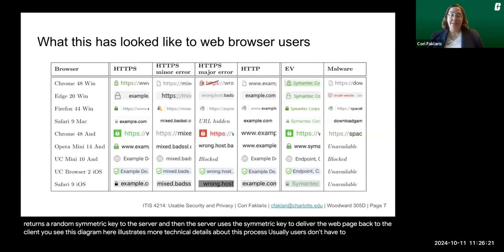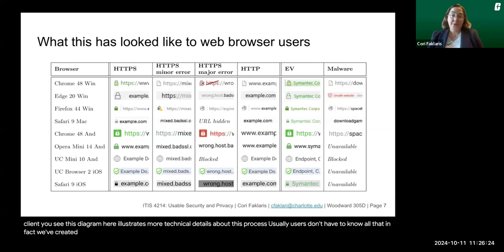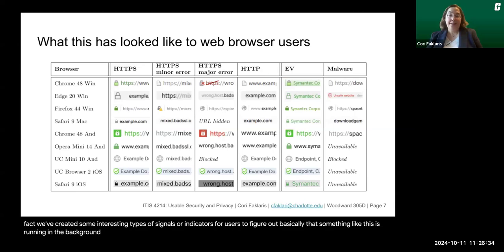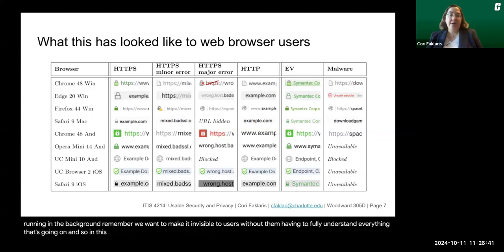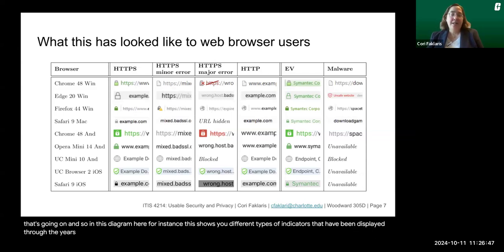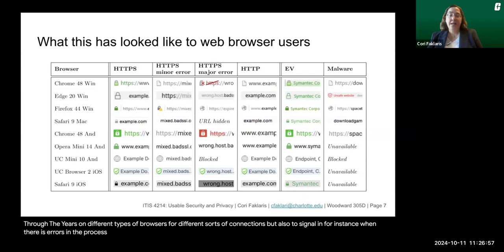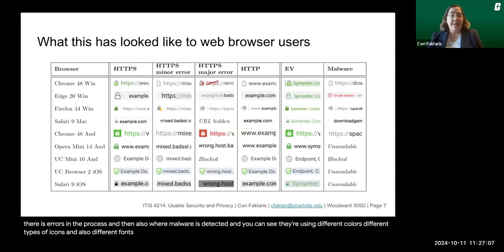Usually users don't have to know all that. We've created interesting signals and indicators for users to see that something like this is running in the background — making it invisible without them having to fully understand what's going on. This diagram shows different types of indicators displayed through the years on different browsers for different connection types, signaling errors in the process and where malware is detected. You can see they use different colors, different icons, and different fonts and font weights.